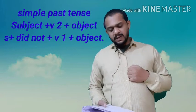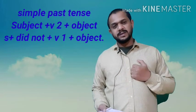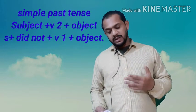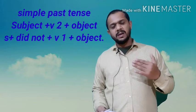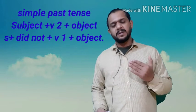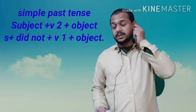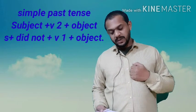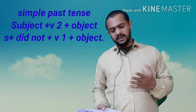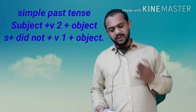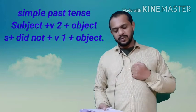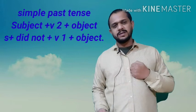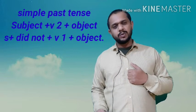For habitual past — habits from the past — we use the structure 'used to.' Examples: 'She used to drink tea in the morning,' 'My grandfather used to read a few chapters of the Gita every day,' 'We used to eat fresh apples in our village,' 'They used to play cricket in their childhood days.' We use 'used to' specifically for habitual past actions.